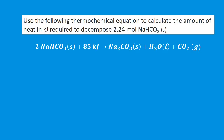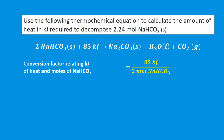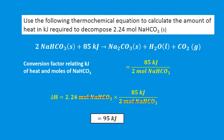Using a thermochemical equation to calculate heat: 85 kilojoules are required to decompose 2 moles of sodium hydrogen carbonate. To find the heat required to decompose 2.24 moles, we write a conversion factor of 85 kJ per 2 moles of NaHCO₃. Multiplying 2.24 moles by this conversion factor gives 2.24 × (85/2) = 95 kilojoules required.